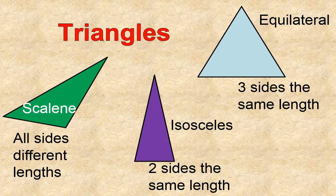So if two sides are the same, isosceles. No sides are the same, it's scalene. And if all three sides are the same length, or the same measurement, then it is an equilateral triangle.